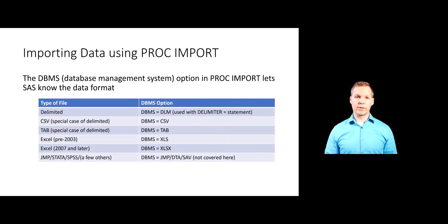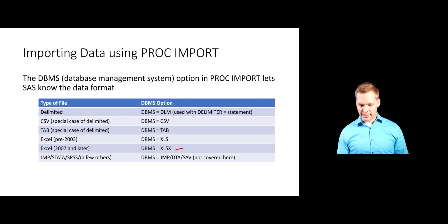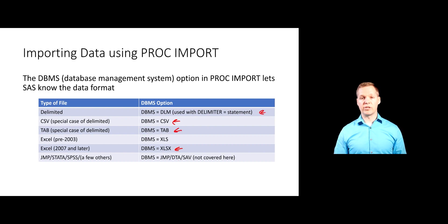DBMS is obviously very important — it tells SAS what type of raw data you have. We should know the common values it takes. XLSX is for a newer version of an Excel file. There is a special value for CSV, a special one for TAB, and DLM for a generic delimiter. We'll see examples of each.